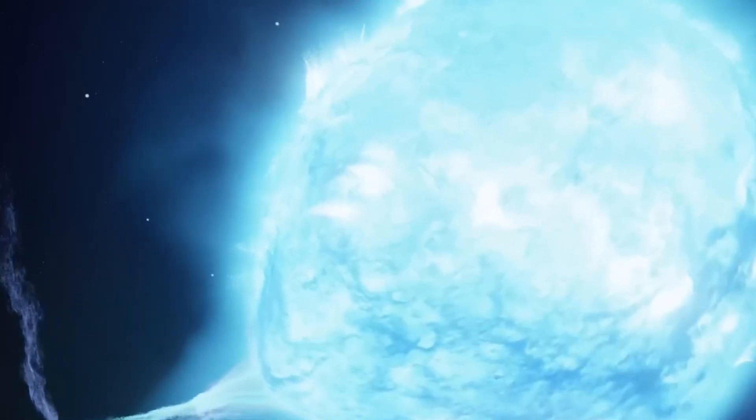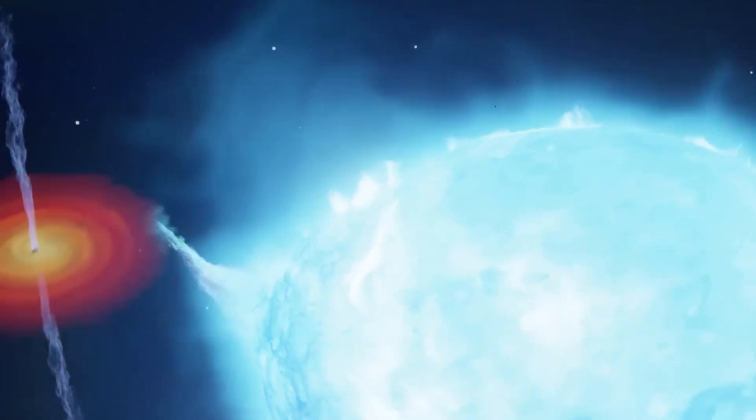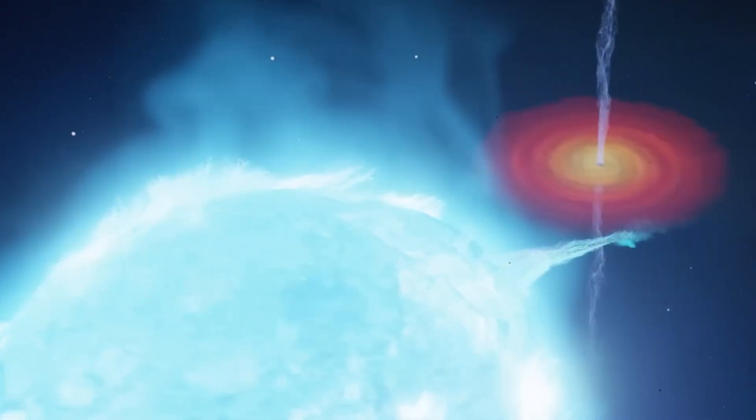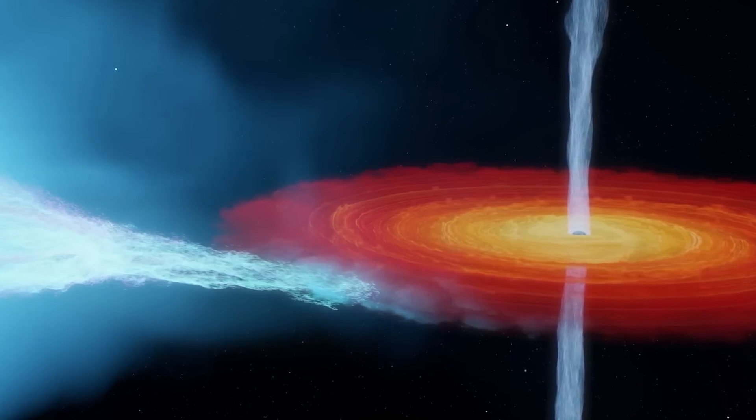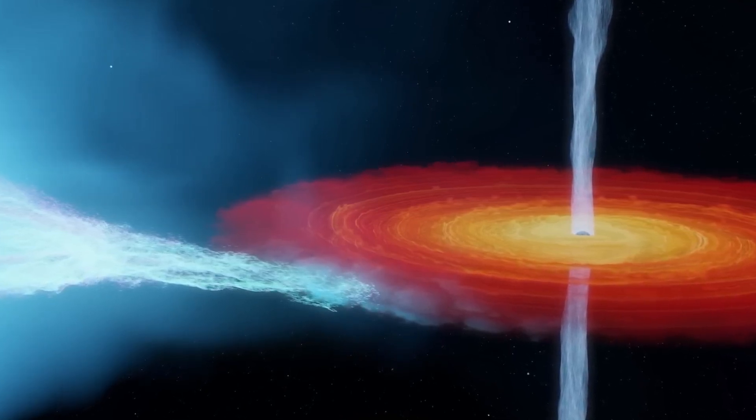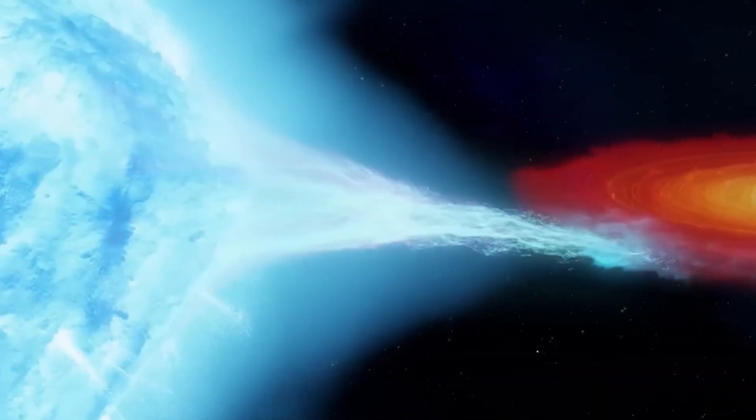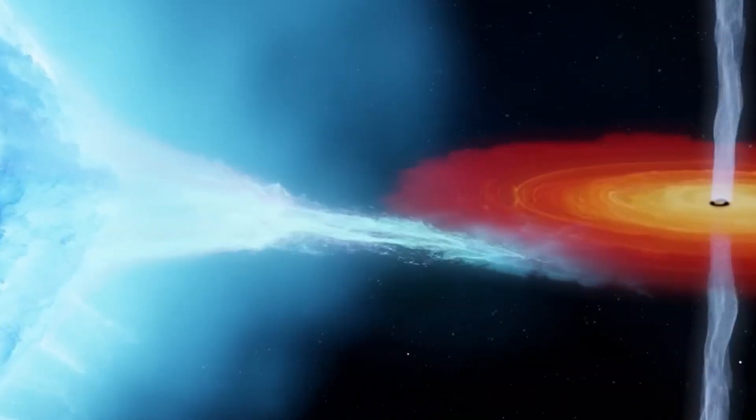Another theory posits that as an object crosses the event horizon of a black hole, it enters a region of spacetime where the flow of time itself becomes increasingly dilated. This effect, known as gravitational time dilation, causes time to slow down relative to an outside observer.